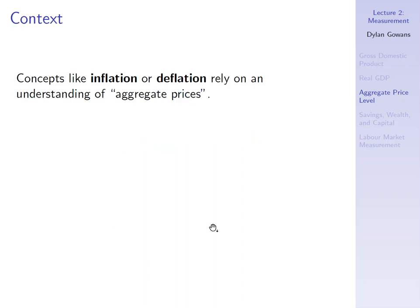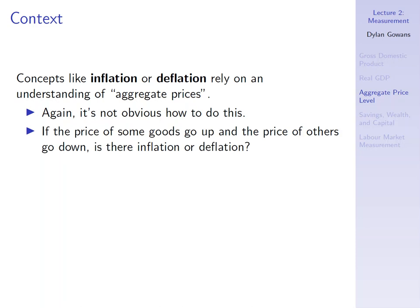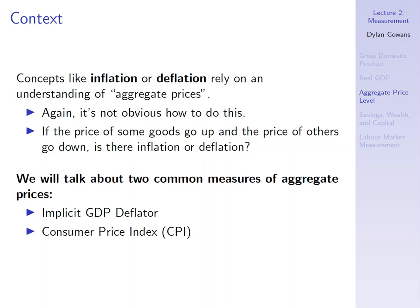Now we move on to calculating the aggregate price level. Much like GDP, this is really relying on a made-up quantity. Concepts like inflation or deflation rely on an understanding of aggregate prices. But obviously there are many different prices in the economy, so how do we add them up? It's like adding apples and oranges. If the prices of some goods go up and others go down, is there inflation or deflation? We'll talk about two common measures: the implicit GDP deflator and the consumer price index.